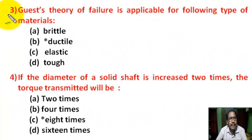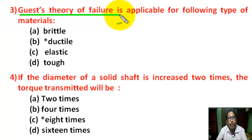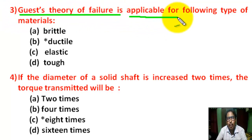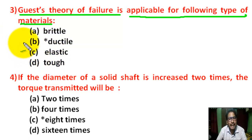Question number 3: the Guest theory of failure is applicable for the following types of materials. There are 4 options. The correct answer is B: Ductile material.